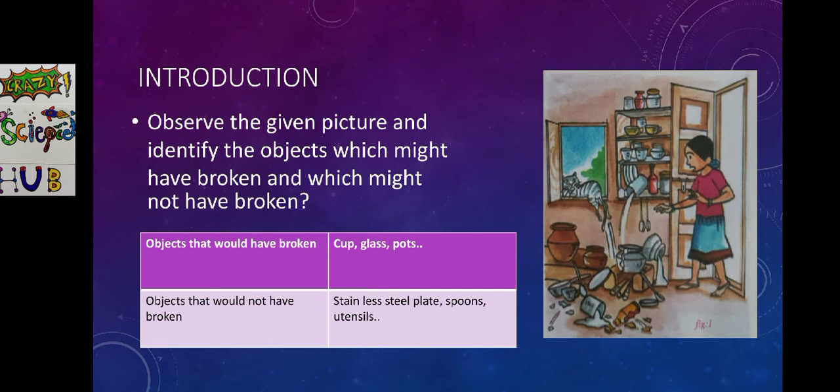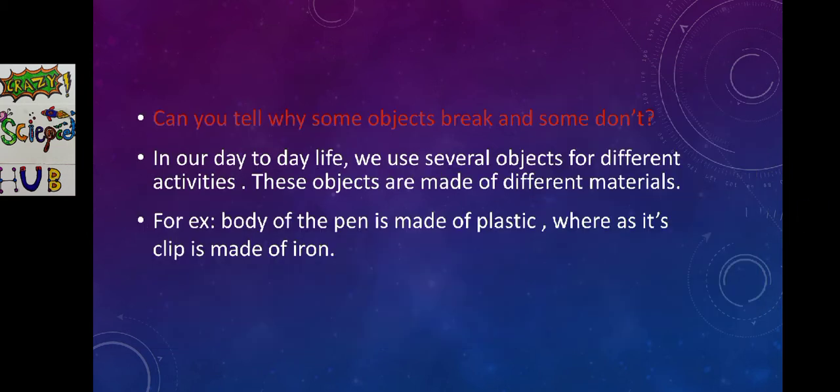If you don't know the answer, you can look at the table here. Objects that would have broken: cup, glass, pots. Objects that would not have broken: stainless steel plate, spoons, utensils which are made up of steel. Let us go through the lesson.